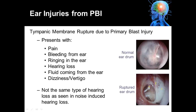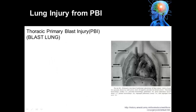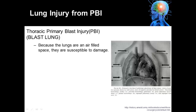The type of hearing loss seen due to damage to the tympanic membrane from a blast force is not the same type of hearing loss as seen in noise-induced hearing loss. Another organ system that can be damaged due to primary blast injury is the lungs. Sometimes this is referred to as the thoracic primary blast injury, or blast lung.